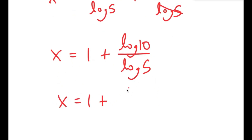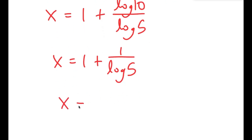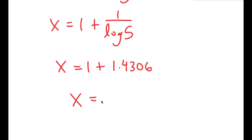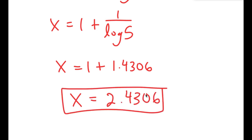Now, log 10 equals 1, so I get x equals 1 plus 1 over log 5. And 1 over log 5 equals approximately 1.4306. So x equals 1 plus 1.4306, which is 2.4306. So this is my answer.